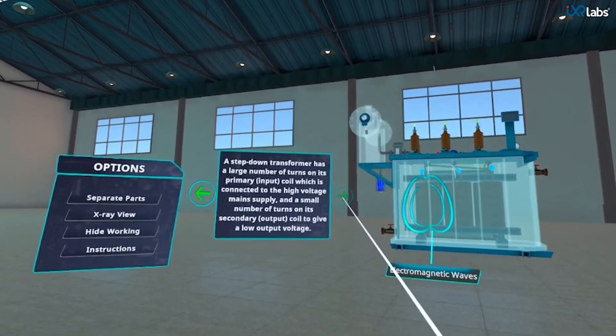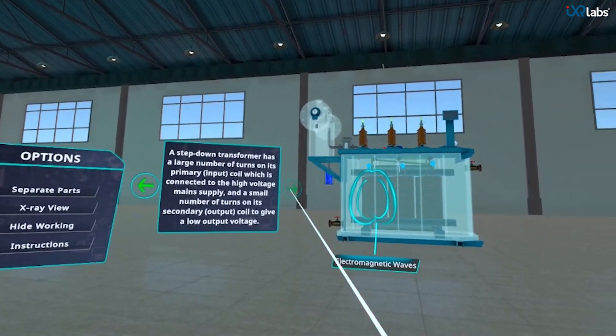The step-down transformer has a large number of turns on its primary coil and a small number of turns on its secondary coil to give a low output voltage.